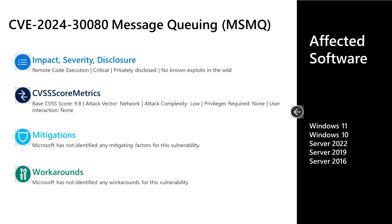Let's dive into some of these vulnerabilities from today's release. The first one is CVE-2024-30080. This is a critical remote code execution vulnerability, privately disclosed with no known exploits out in the wild. This has a CVSS base score of 9.8 — almost at the high point of 10 — so clearly elevated when we talk about risk. The attack vector is over the network, the attack complexity is low, no privileges required, and no user interaction is required to leverage this vulnerability. There are no documented mitigations or workarounds, but a system is only vulnerable to this if the message queuing service is installed and running. If the service is installed but not running, it's not vulnerable.